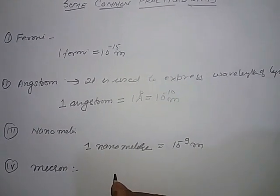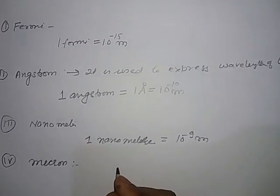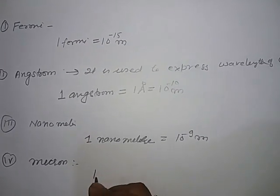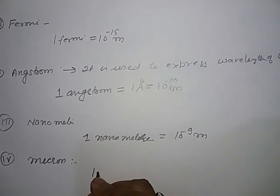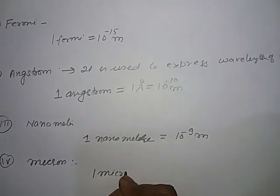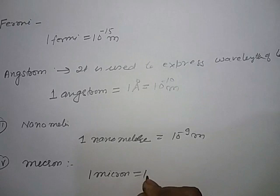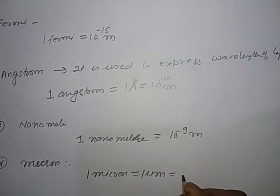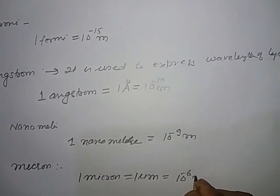defined as micrometer - one micrometer equals one micron. Micro means 10 to the power minus 6 meters.